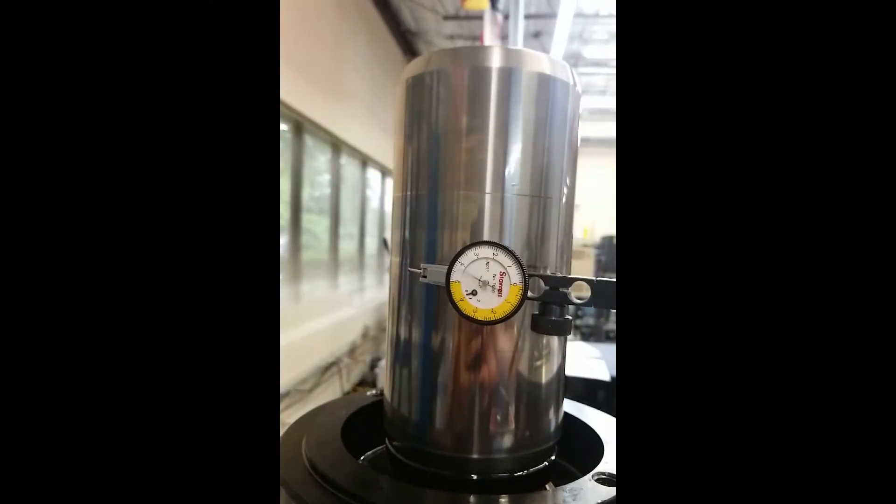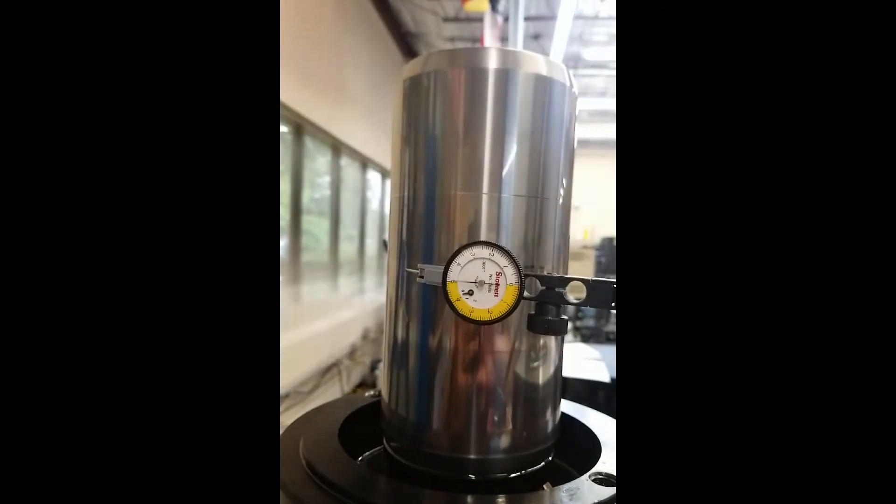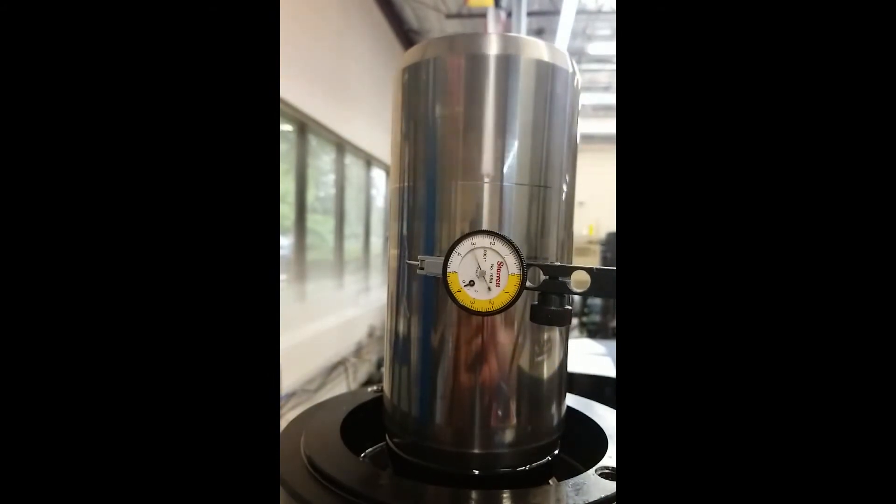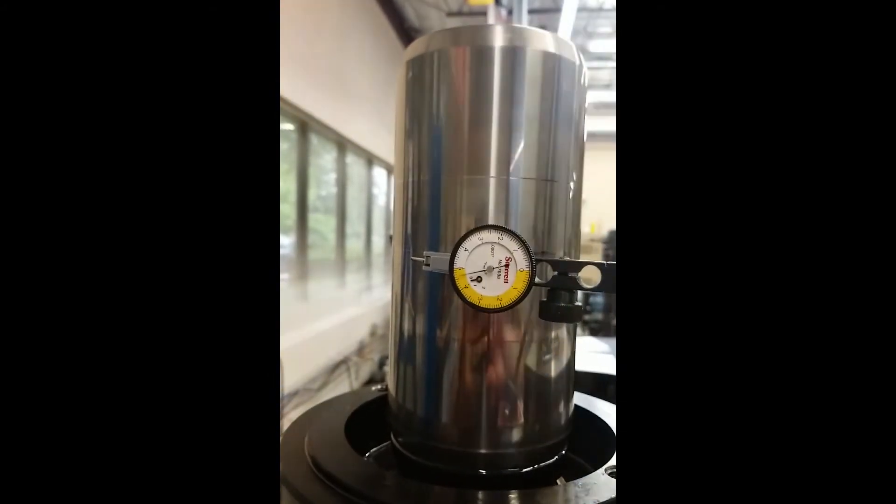Following the test, the shaft run-out was documented. The run-out at the upper seal location was 6 thousandths of an inch. The run-out at the lower seal location was 4 and 1 half thousandths of an inch.